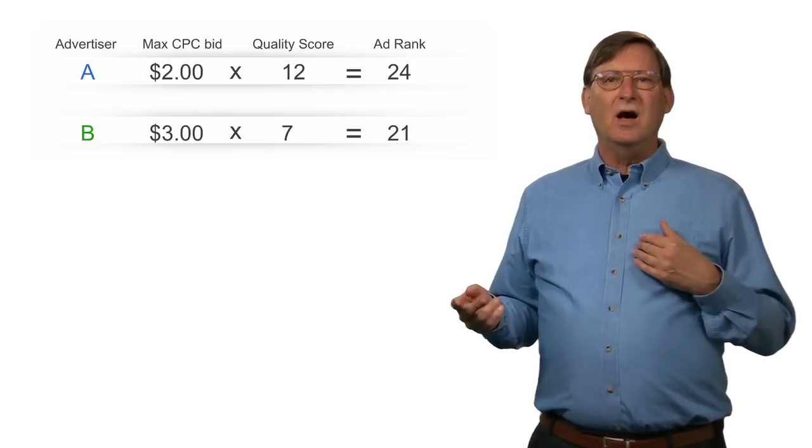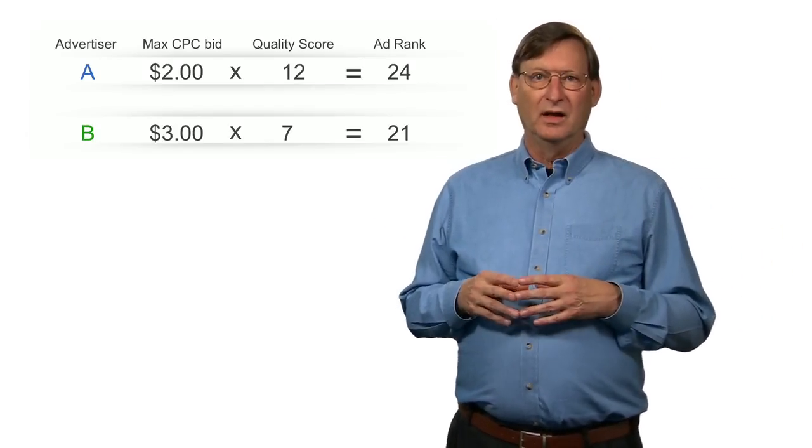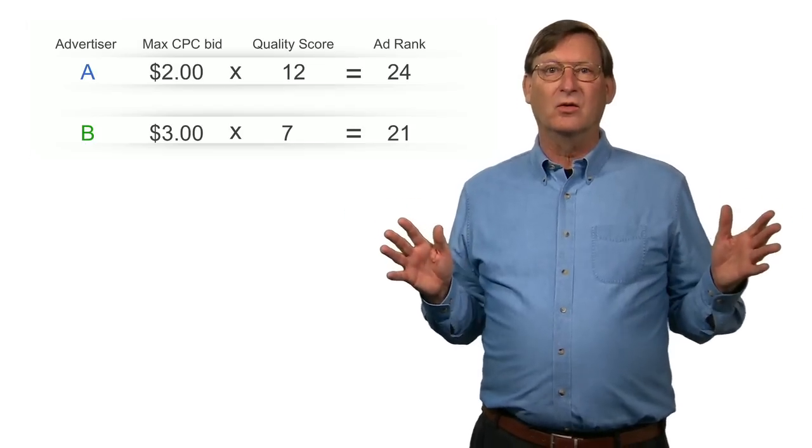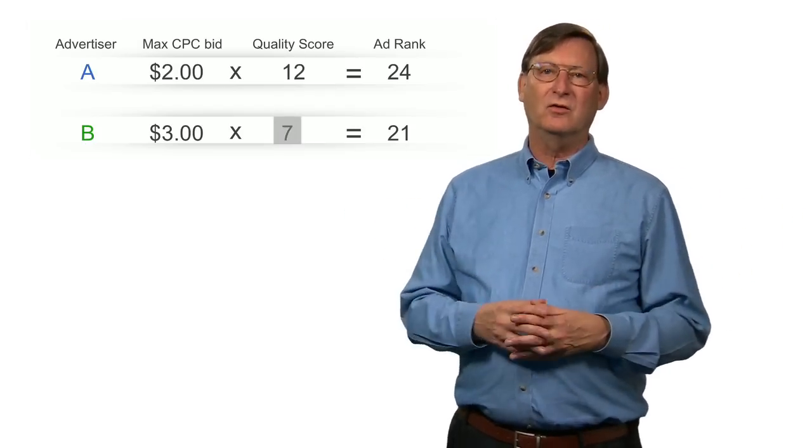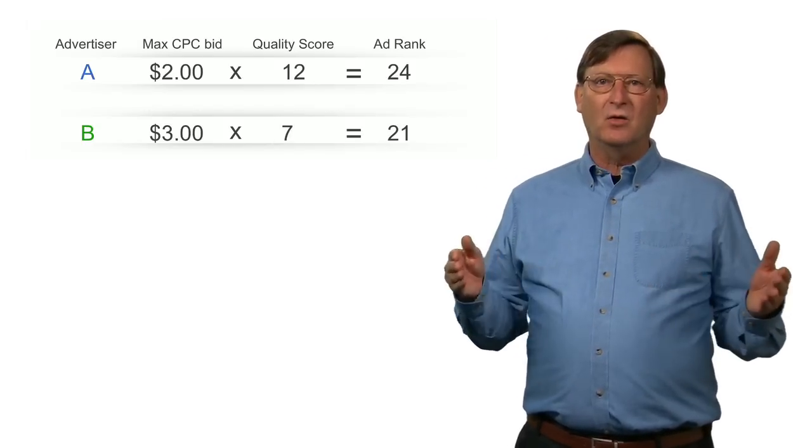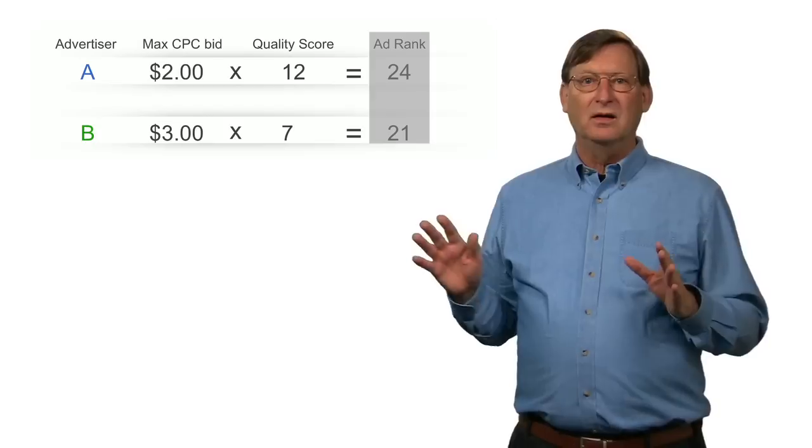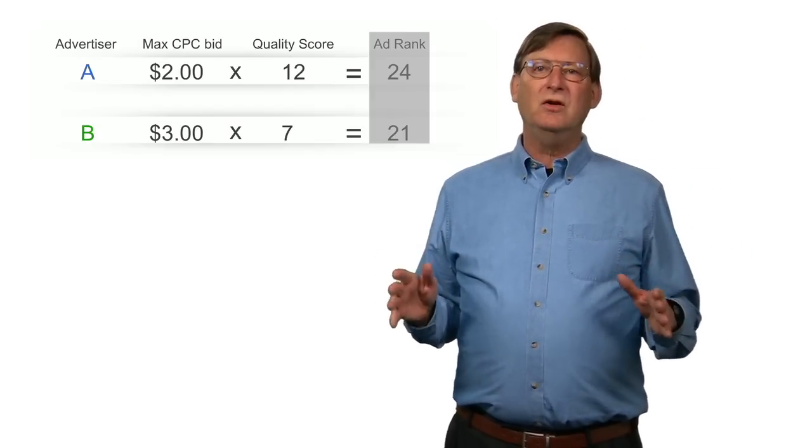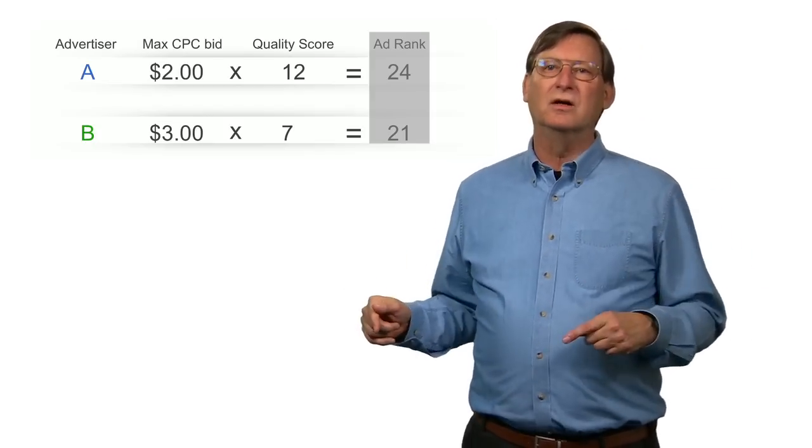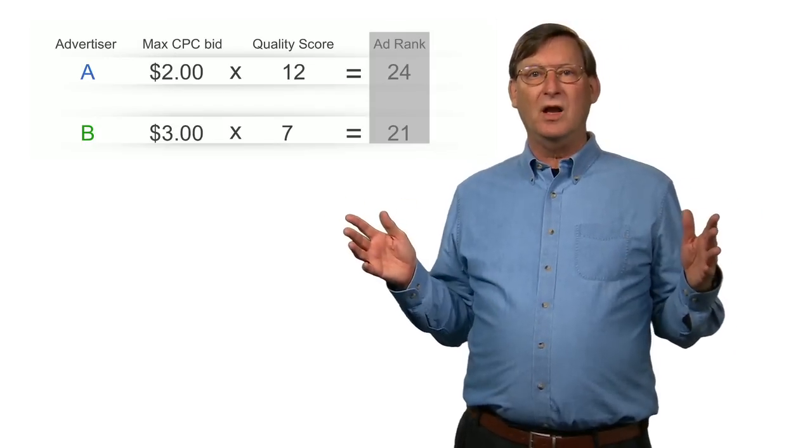Suppose we have two advertisers, A and B, who are bidding $2 and $3 for a cost per click ad in a particular auction. Advertiser A has a quality score of 12, while advertiser B has a lower quality score of 7. So by multiplying the max CPC bid by the quality score, we get each advertiser's ad rank. Now in this example, notice that even though advertiser A's bid is lower than advertiser B's, his ad rank is higher because of his higher quality score.